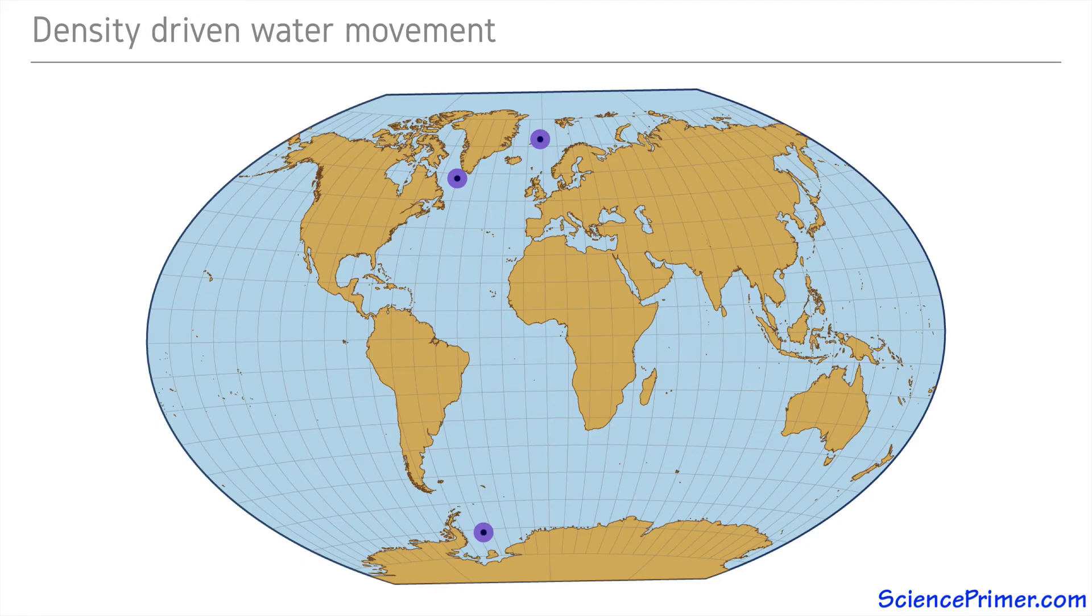The sinking water in the North Atlantic spreads southward below the surface water, creating a mass of cold, dense, deep water referred to as the North Atlantic bottom water. The bottom water formed in the Southern Ocean spreads around the Southern Ocean and moves up into other large ocean basins.